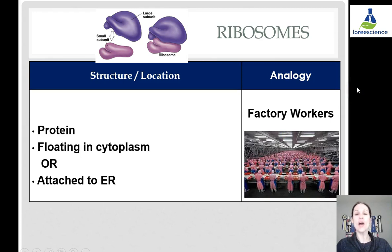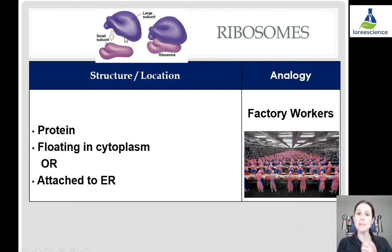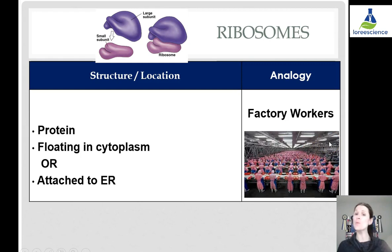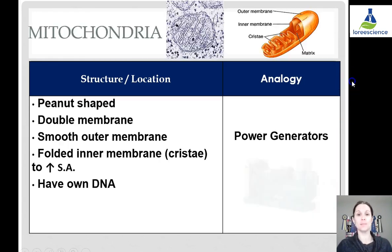Ribosomes are actually proteins themselves, even though their function is to make proteins — usually two subunits that come together to work. They are free-floating in the cytoplasm or embedded in the endoplasmic reticulum. We can think of them like factory workers: free to move around the factory, but oftentimes right at the assembly line doing their jobs.